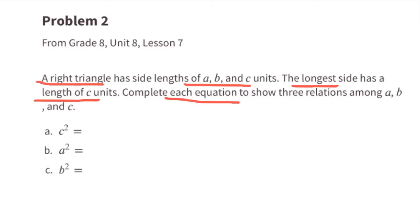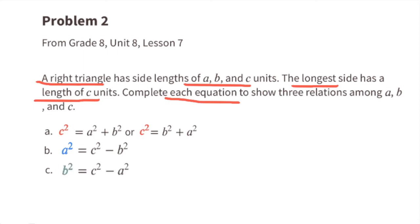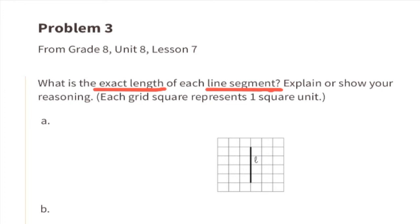Problem number two from eighth grade Unit 8, Lesson 7. A right triangle has side lengths a, b, and c, where c is the longest side. Complete each equation showing three relations among a, b, and c: (a) c² = a² + b²; (b) a² = c² − b²; (c) b² = c² − a².